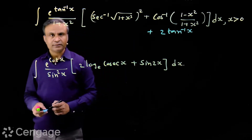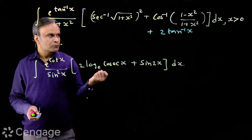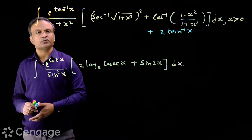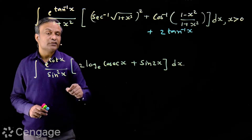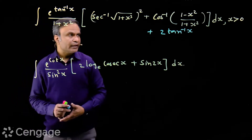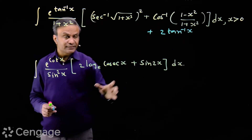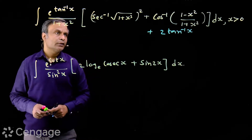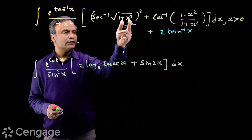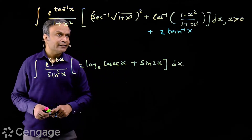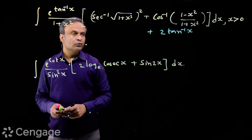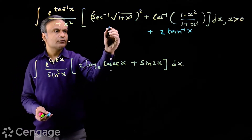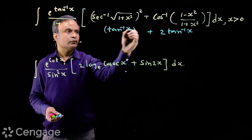We are given that x > 0. When x > 0, θ belongs to the open interval (0, π/2), so 2θ belongs to (0, π), which falls within the range of the cos⁻¹ function. So we can write cos⁻¹(cos 2θ) = 2θ. Now, sec⁻¹(√(1+x²)) = tan⁻¹x. If we put x = tanθ, then 1 + tan²θ = sec²θ, whose square root is secθ. Since x is positive, sec⁻¹(secθ) = θ = tan⁻¹x. So we have the square of tan⁻¹x inside the bracket.